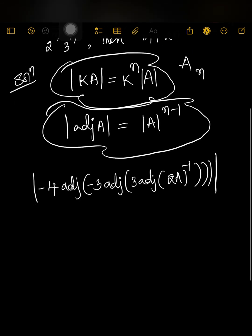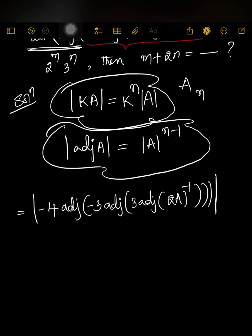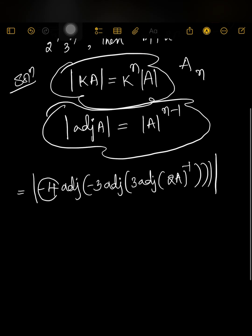That equals 2^m · 3^n, which we can compare later. Using the first concept, det(kA) = k^n · det(A), here k is -4. So we write it as (-4)^3 whole squared — that is, (-4) appears 3 times because of order 3, and then the whole-squared comes from the adjoint formula.